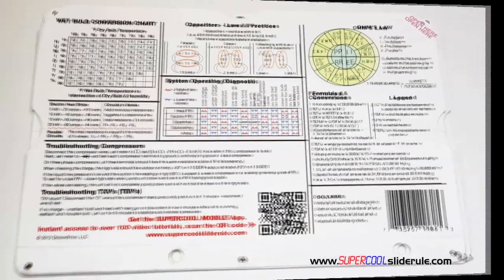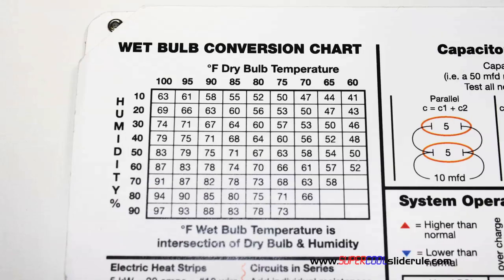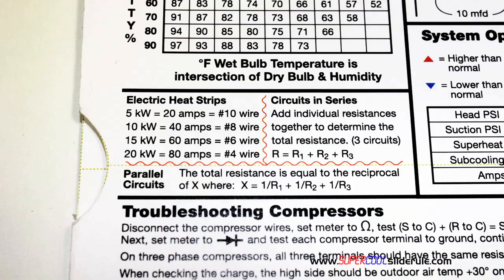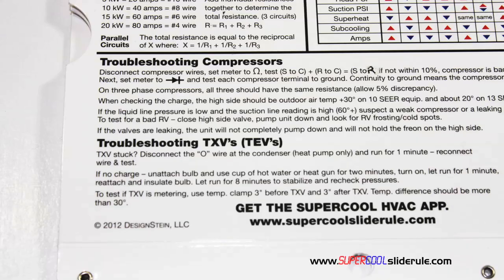The back cover contains required formulas. It has capacitor rules and practices, a wet bulb conversion chart, how to perform computations on series or parallel circuits, an electric heat strip guide, a complete system troubleshooting diagnostic chart, and how to troubleshoot compressors and TXV.